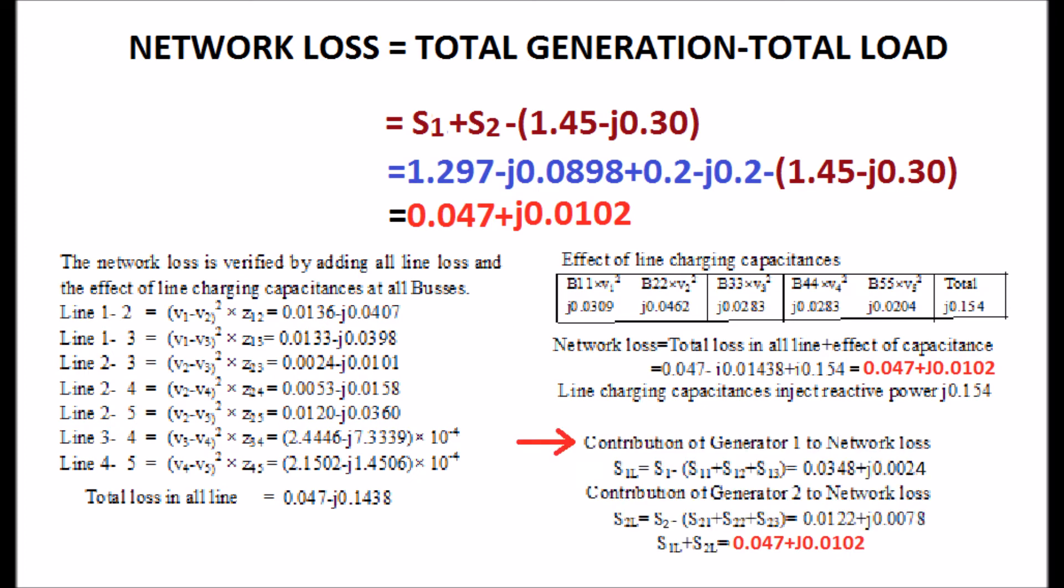Again, the network loss is verified with the contribution of generator 1 to network loss and generator 2 to network loss. The values are calculated from the total generator power minus the contribution of each generator to the total system load as shown in the display.